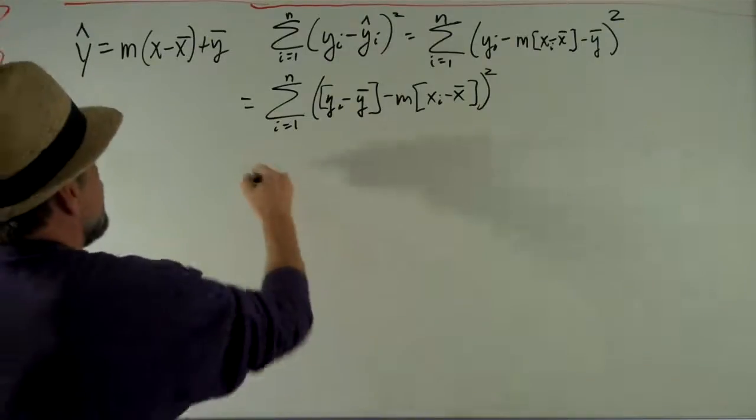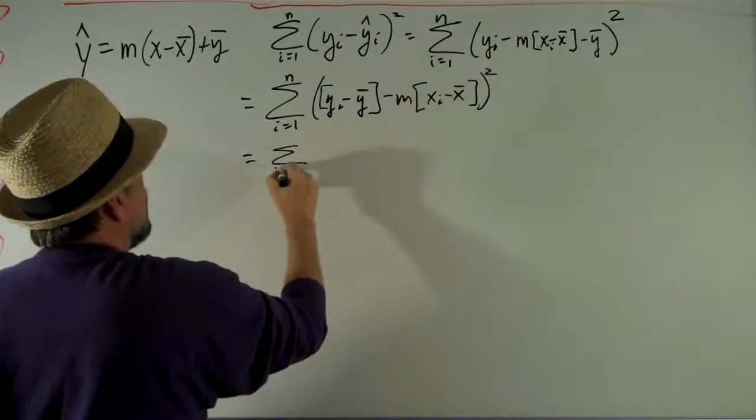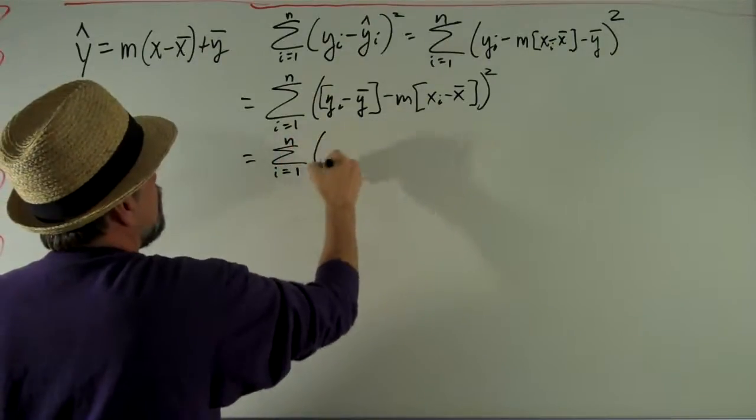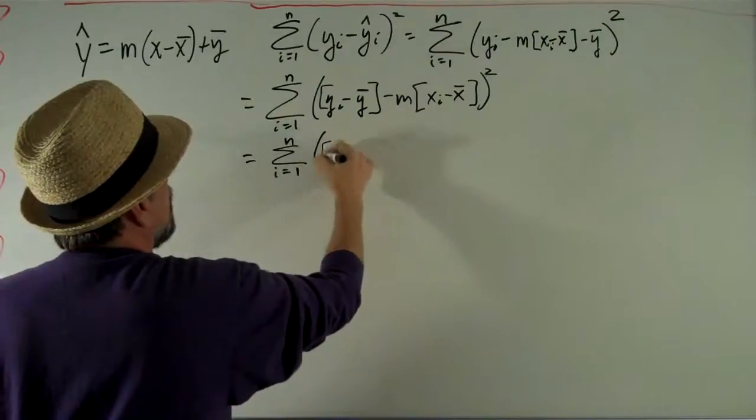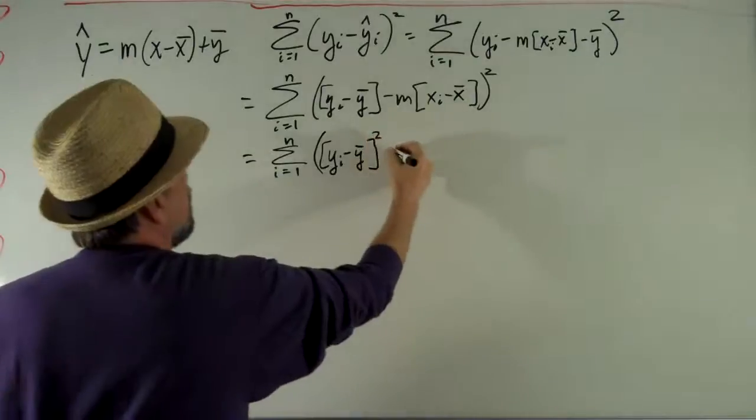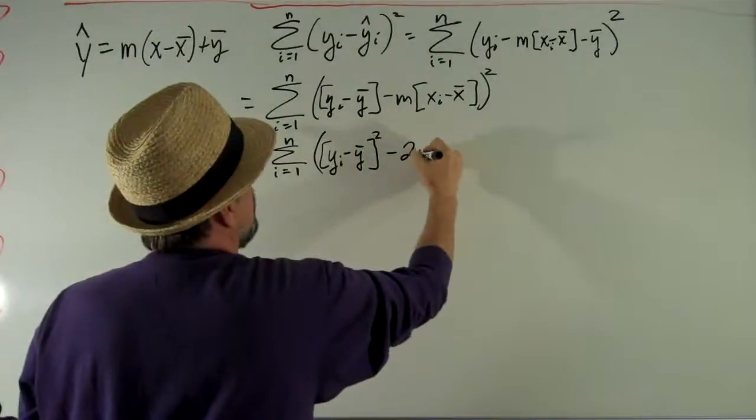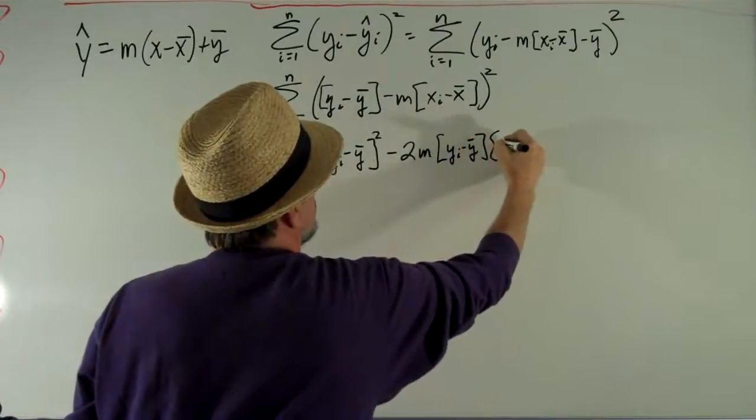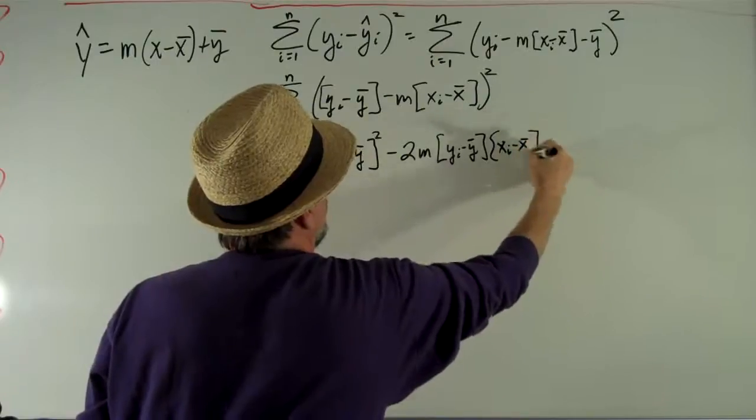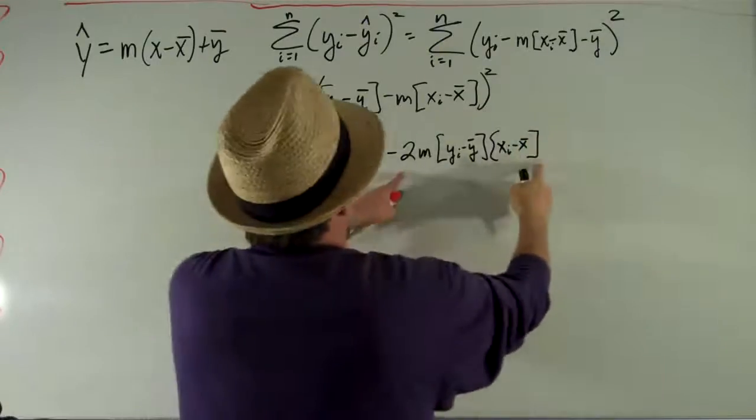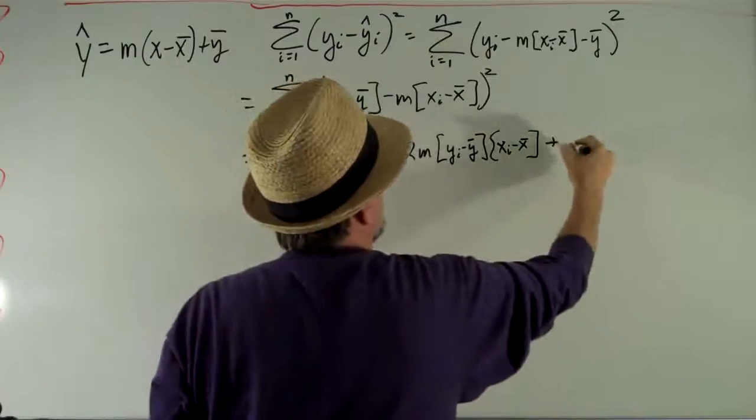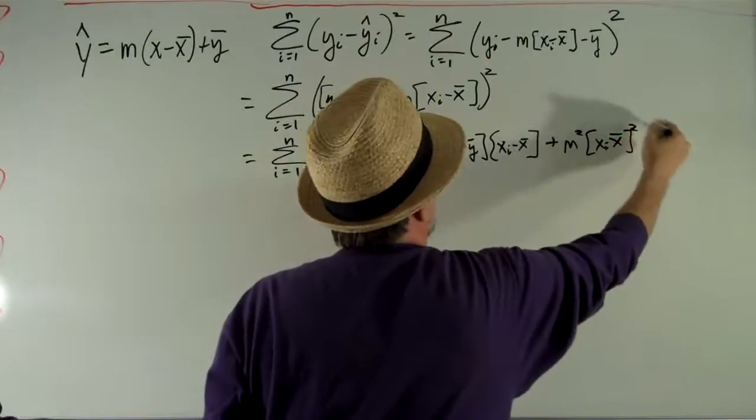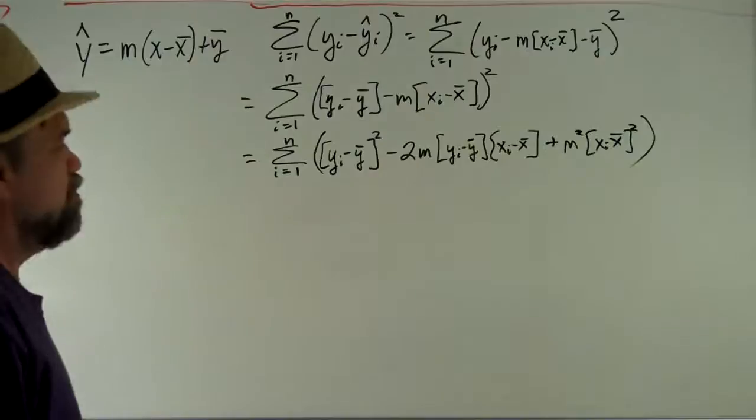Let's go ahead and multiply that out. It's going to be i equals 1, i goes from 1 to n, of yi minus y bar squared minus 2m yi minus y bar xi minus x bar. That's the middle term when I expand this, and then the last term is plus m squared times xi minus x bar squared.